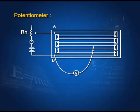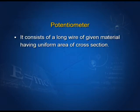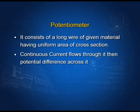Potentiometer. A potentiometer consists of a long wire bent in the form of a wooden board as shown in the diagram. Point A of the potentiometer is connected to a rheostat, and point B is connected to the positive terminal of the cell. If we measure potential difference across length BJ equal to L, then potential difference V = K·L, where K is the potential gradient of the wire. The wire has uniform area of cross section, and if constant current flows through it, then V = I·R.